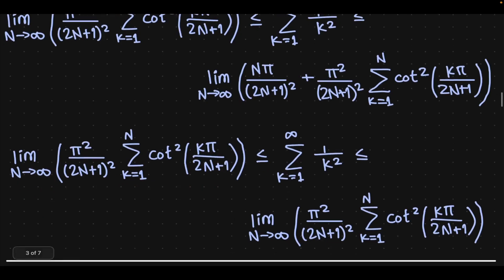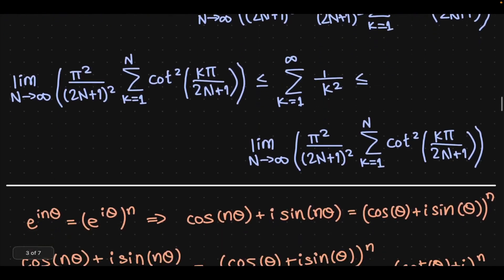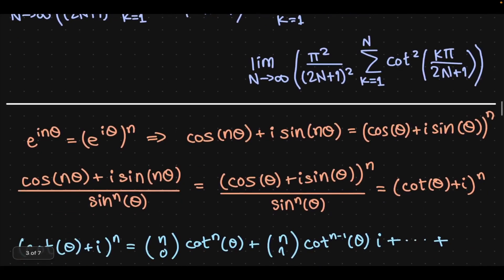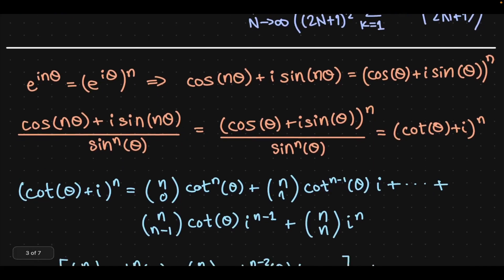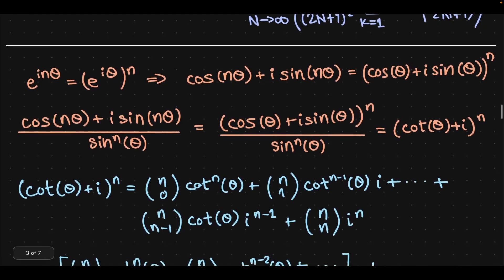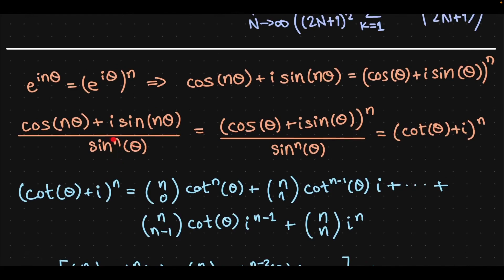That's fine, but to do that is not going to be trivial — it will look like a detour, but in the end it will all work out. First, we take e^(inθ) = (e^(iθ))^n. By De Moivre's theorem, that translates into cos(nθ) + i·sin(nθ) = (cos θ + i sin θ)^n. If we divide everything by sin^n(θ), we get (cos θ + i)^n on the right-hand side.